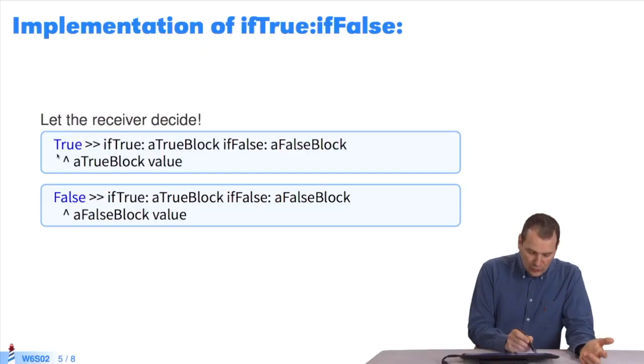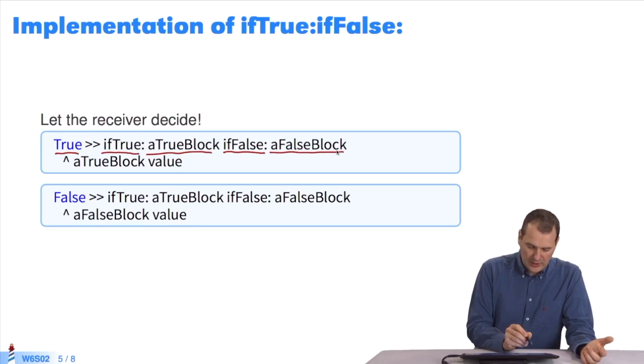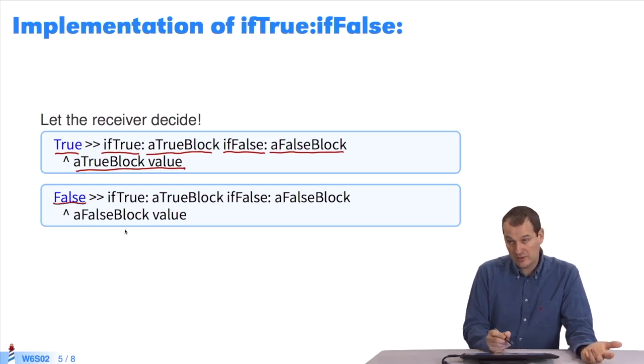How is it implemented? In exactly the same manner as or and not. In the true class, I have a method called if-true, if-false, and two arguments. One block for true, and one block for false. What do I do? When I'm in the true block, I execute true. And when I'm in the false class, I have the same method with the same two arguments. But since I'm in the false class, I execute the false block. I have the boolean's implementation.